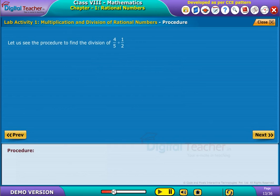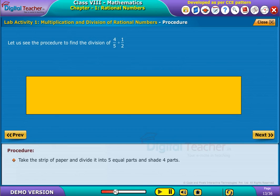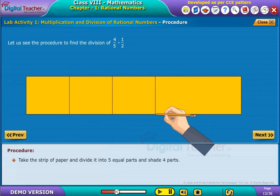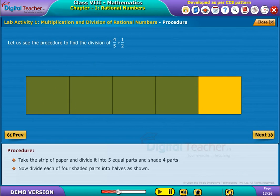Let us see the procedure to find the division of 4 by 5 when divided with 1 by 2. Take the strip of paper and divide it into five equal parts and shade four parts. Now, divide each of four shaded parts into halves as shown.